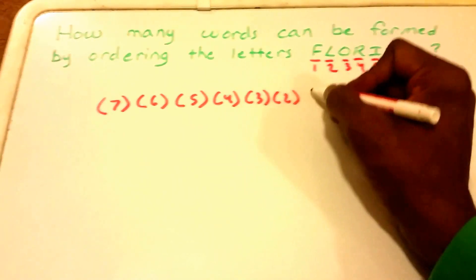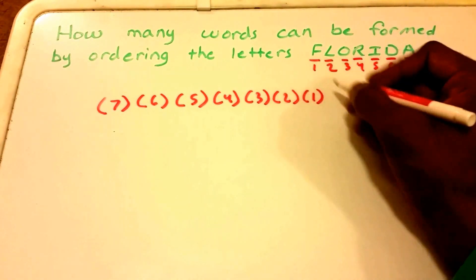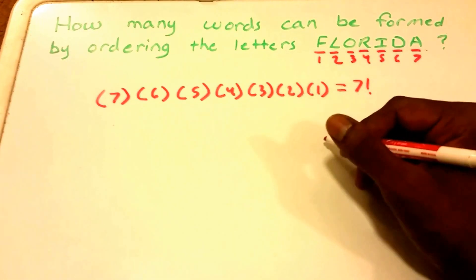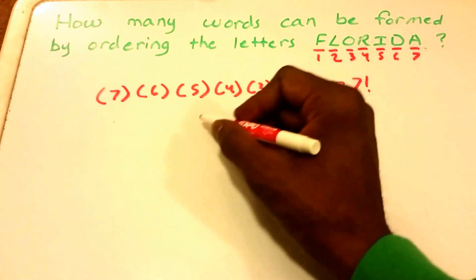Times two times one, which is seven factorial. And if I'm doing my math right, let's see if I can...